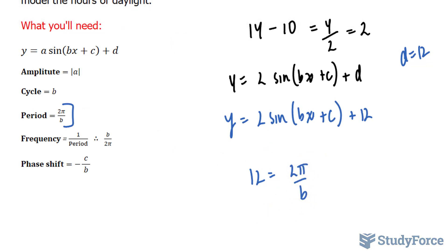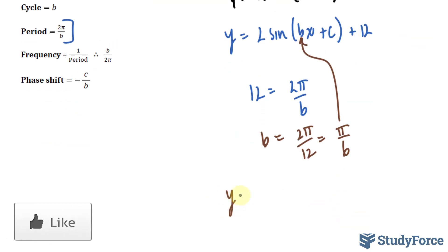If we solve for b, we end up with b = 2π/12, and that equals π/6. This can now be substituted into our growing equation. y = 2 sin(π/6 x + c) + 12.